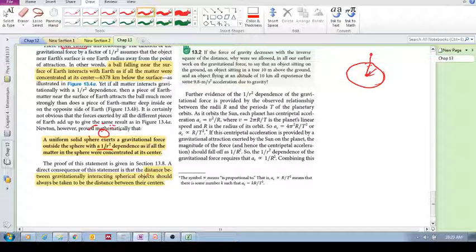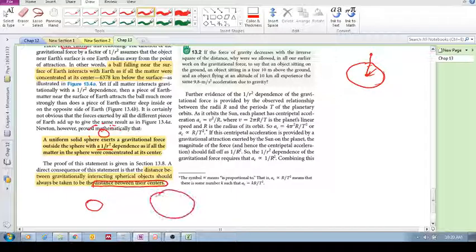Here's another important statement: the distance between gravitationally interacting spherical objects should always be taken as the distance between their centers. Two objects interacting - what this means is we need to consider or assume that all their mass is concentrated at their center, and that is the r, it's between there.